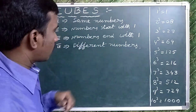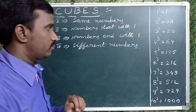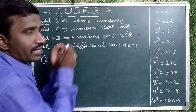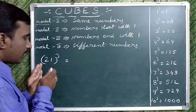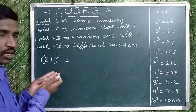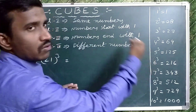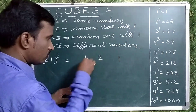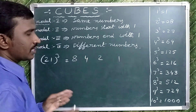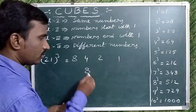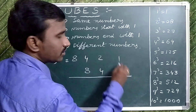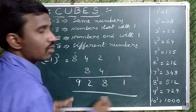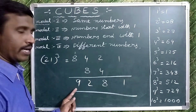Now observe the third model. In this model, the number ends with 1. Take 21 cube. This is similar to the second model, but in the second model the numbers are written left to right, whereas in this model the numbers are written right to left. Write 1, 2. 2 square is 4. 2 cube is 8. Double of the middle numbers: double of 4 is 8, double of 2 is 4. Now add these two rows: 1, 8, 12, 1, 9. So 21 cube is 9261.